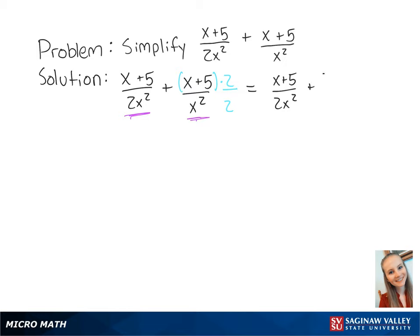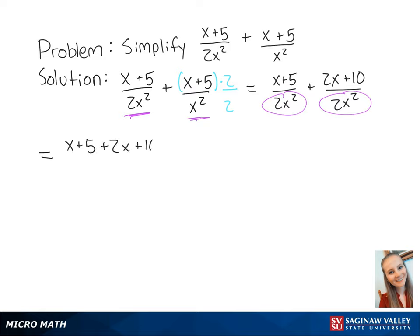Plus 2x plus 10 over 2x squared. Now we have a common denominator, so we can combine the two fractions. This will give us x plus 5 plus 2x plus 10, all over 2x squared.